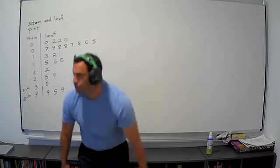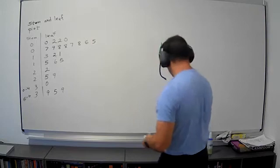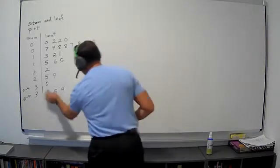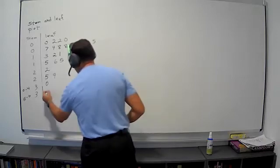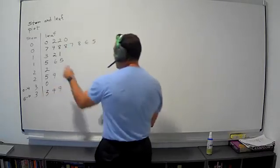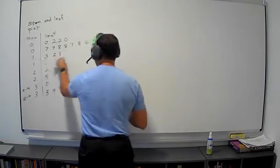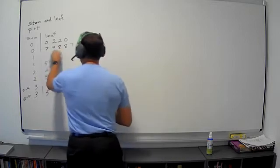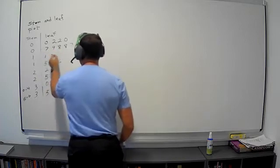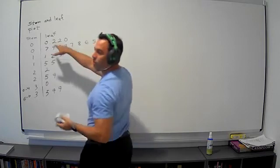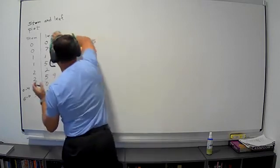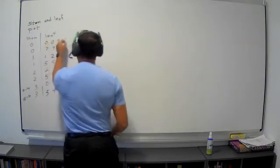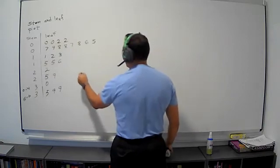So let me proceed and go ahead and put them in order. So here, this is five, nine, nine. This one's five, five, six. This is one, two, three. I'll do that one last. The next one is zero, zero, two, two. And then this one is the hardest one — five, six, seven, seven, eight, eight, eight.